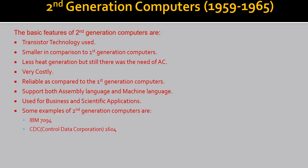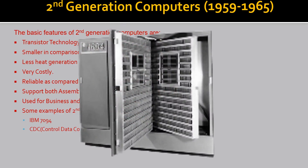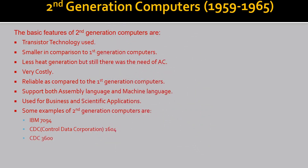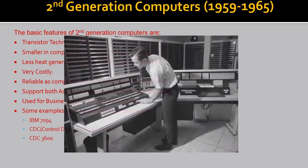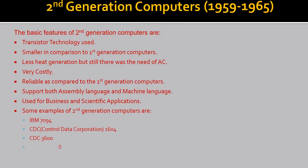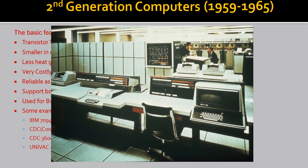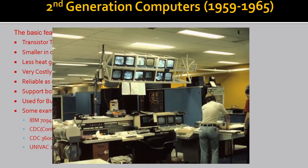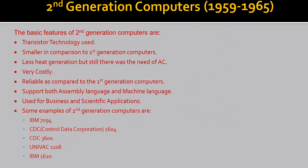Some examples of 2nd generation computers are: IBM 7094, CDC 1604 (Control Data Corporation), CDC 3600, UNIVAC 1108, and IBM 1620.